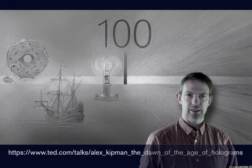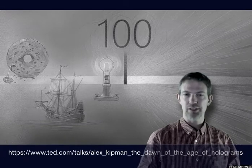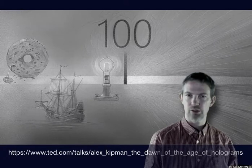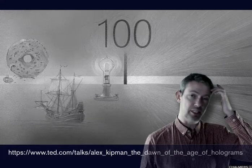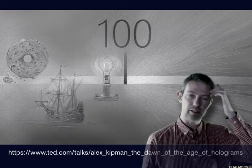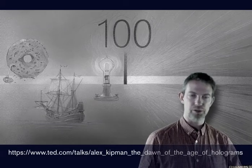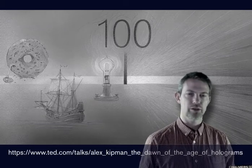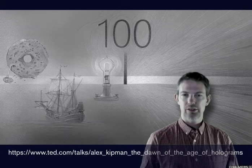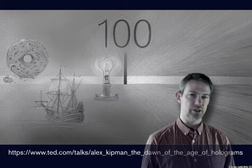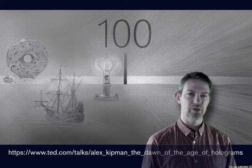Alex suggests that what we see right now when we are using 2D graphical interfaces to control computers is that we are just seeing 100 years of 2D interfaces. And that will soon be over. His argument is that before the computers, we interacted with the world in 3D — the physical, actual world. And then during the last century, we have been interacting with computers via graphical interface, usually 2D.